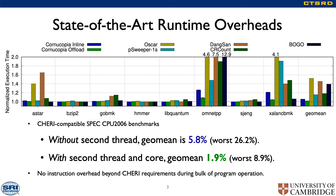Cornucopia achieves overheads averaging less than 2% execution time and runs on CHERI-enabled CPUs, soon to include ARM's experimental Morello. Applications atop Cornucopia run with no modifications beyond those required by CHERI-ABI, and with little perturbation from its mostly concurrent sweeps through memory.